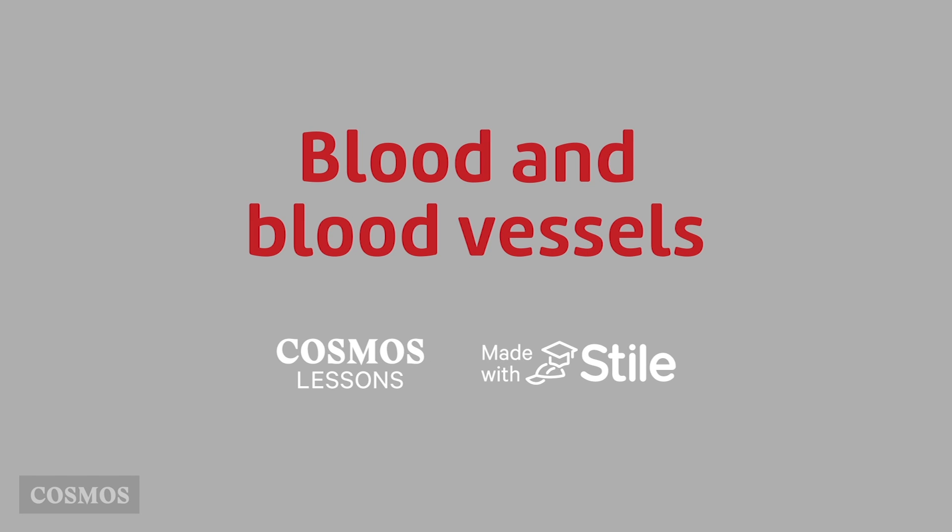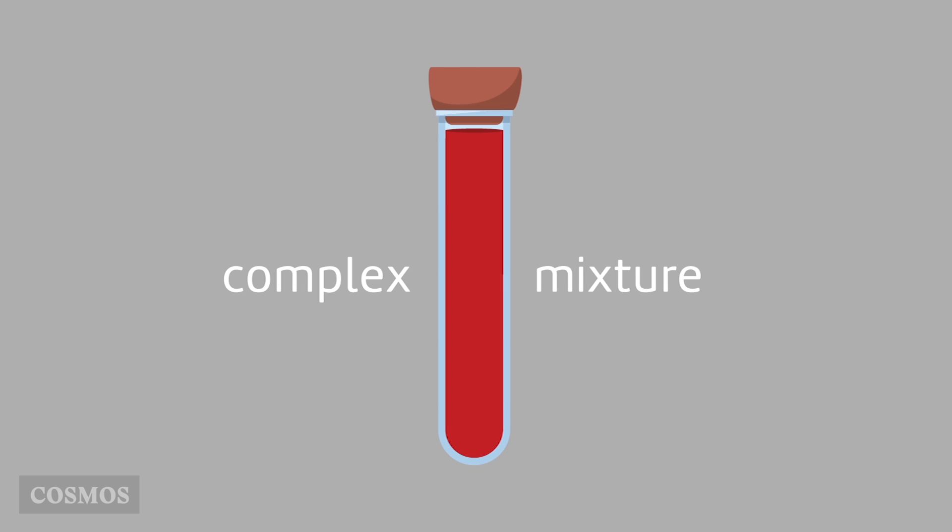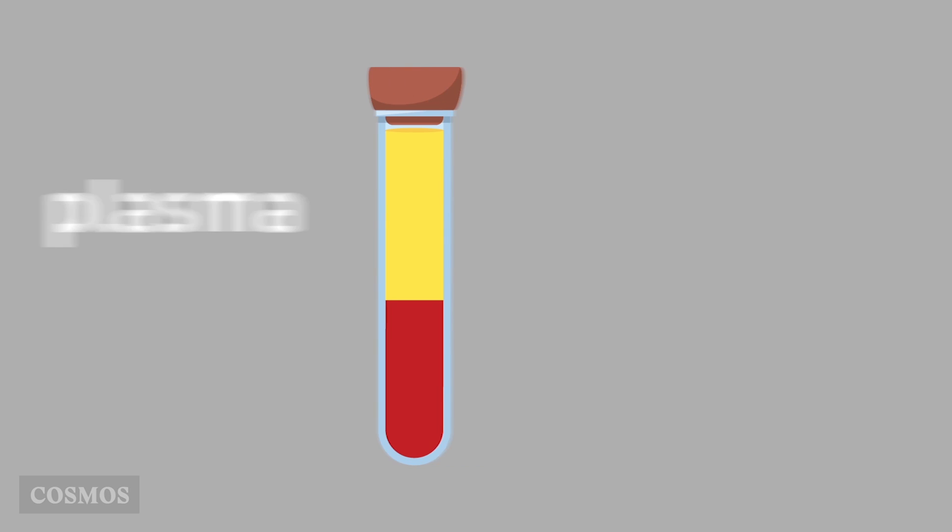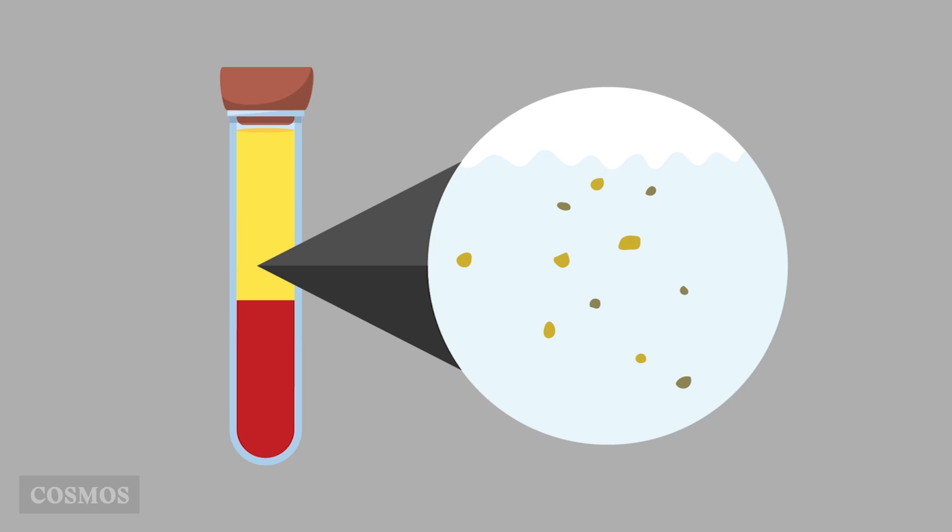Blood and blood vessels. Blood is a complex mixture. Most of it, a bit over half, is plasma, which is water with nutrients and wastes dissolved in it.